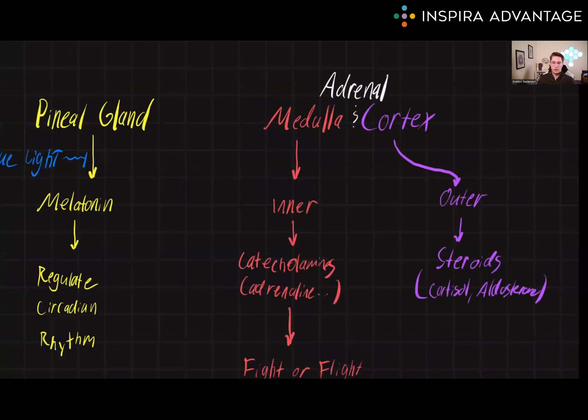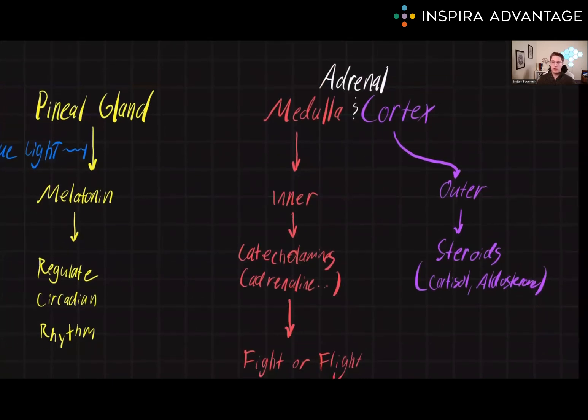Finally, we have the adrenal glands. The adrenal glands are located on top of the kidneys, and they play a crucial role in the body's response to stress. The adrenal medulla is the inner part of the gland and produces catecholamines, such as adrenaline and noradrenaline. You might recognize these hormones as those that cause the fight or flight response to stress.